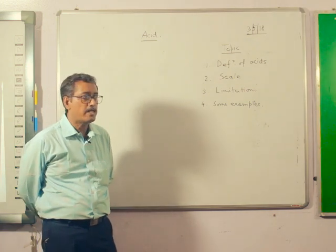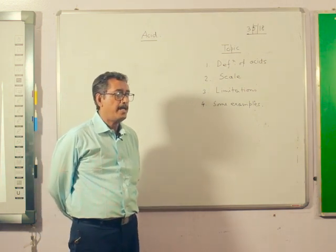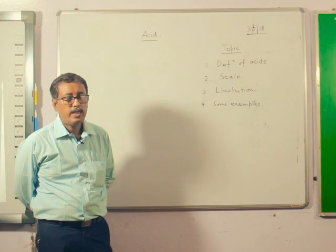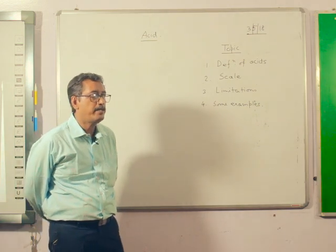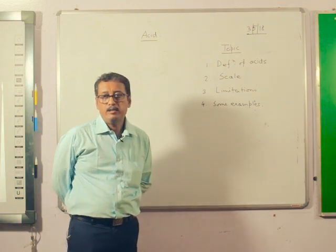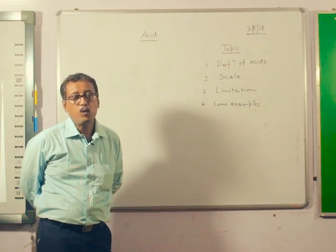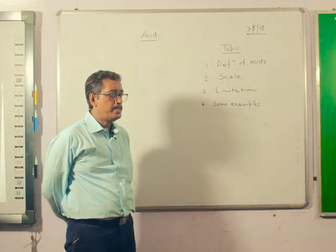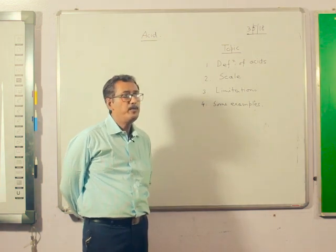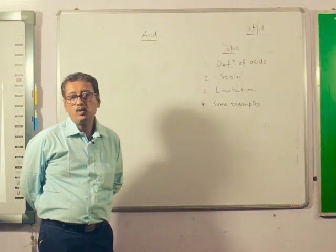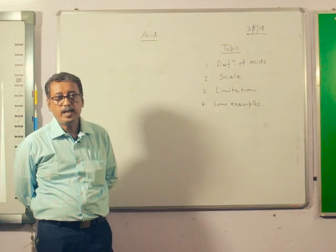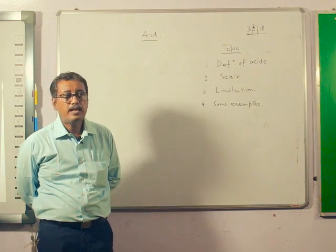Take an easy example: trimethylamine reacts with boron trifluoride to give an adduct, Me₃N⁺·BF₃⁻. Here the lone pair on nitrogen is accommodated in the vacant orbitals of boron. So boron is accepting the electron pairs from nitrogen. Therefore BF₃ is acting as the Lewis acid, whereas trimethylamine Me₃N is acting as the Lewis base.